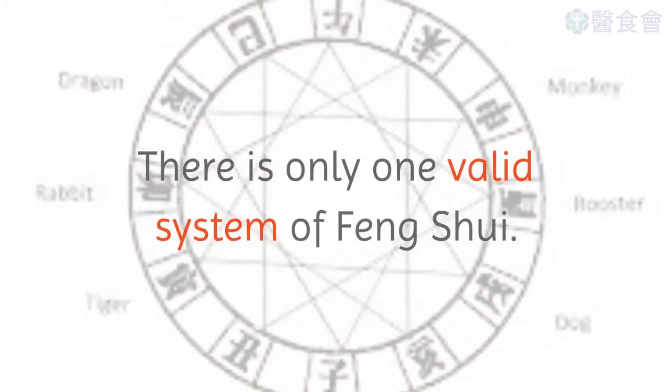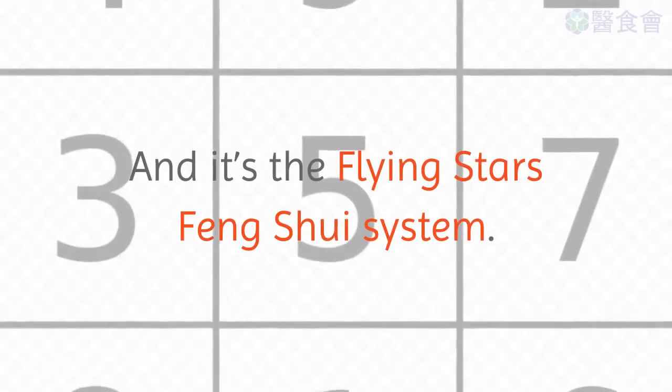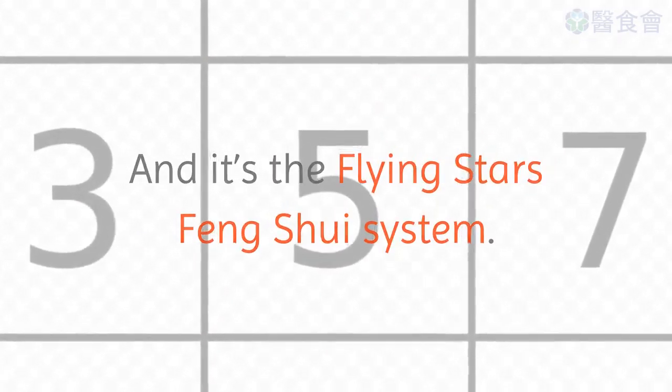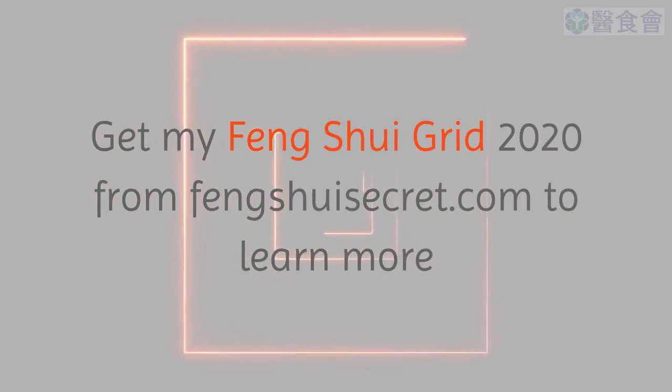There is only one valid system of Feng Shui. And it's the Flying Stars Feng Shui system. Get my Feng Shui Grid 2020 from FengShuiSecret.com to learn more.